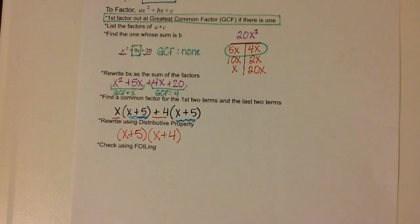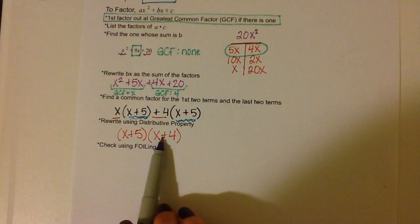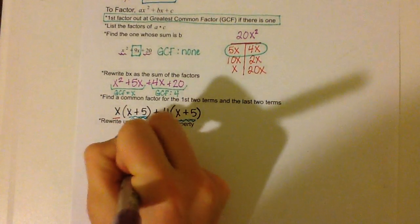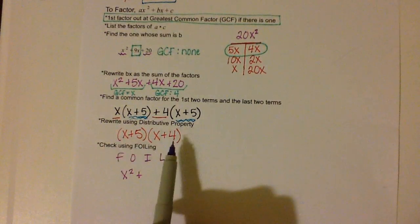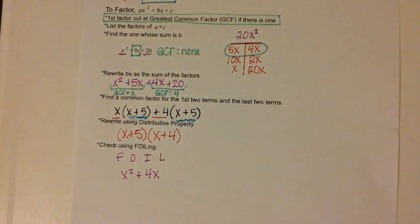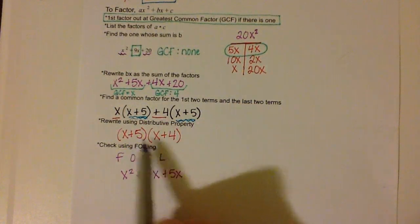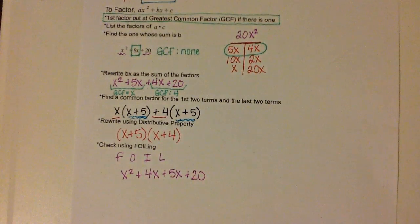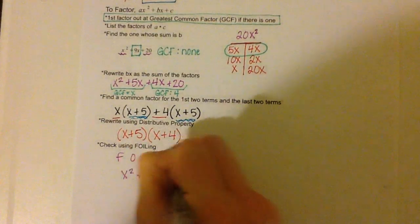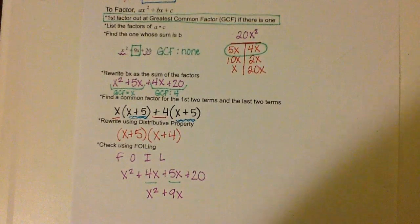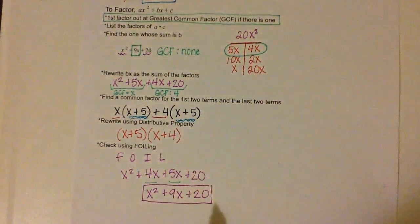Our last step is to check our answer by FOILing. First times first: x times x is x squared. Plus the outside: x times 4 is 4x. Plus the inner: 5 times x is 5x. Times the last: 5 times 4 is plus 20. If we combine our like terms — 4x plus 5x is 9x — we are left with x squared plus 9x plus 20. And is that what we started with? Yes, it is. That is how you know you are correct.